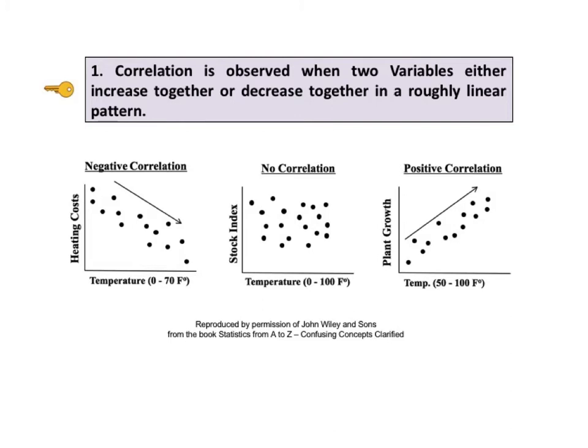In the middle graph, the temperature can go up or down, but there is no correlation with the stock index or vice versa. And in the graph on the right, we see positive correlation. When the temperature goes up, plant growth also goes up.